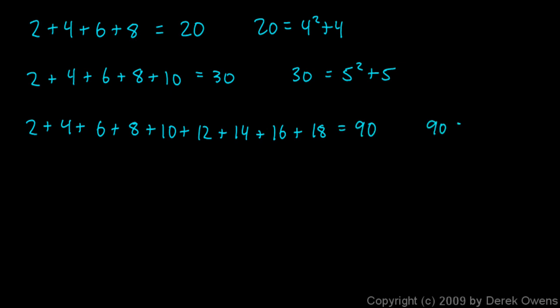And what is 90? It is 9 squared plus 9, because 9 squared is 81 add 9. So I have 9 terms, and the result is also 9 squared plus 9, and that's a pretty interesting pattern.